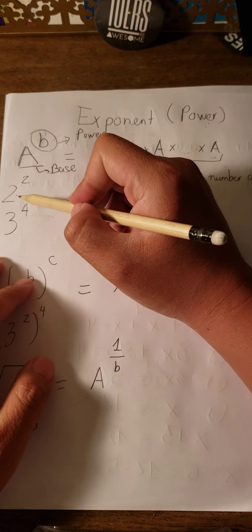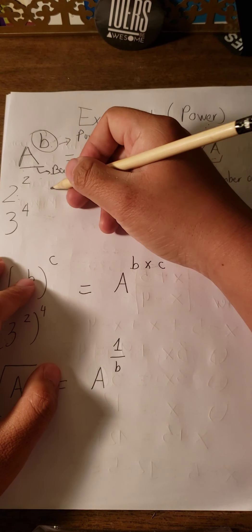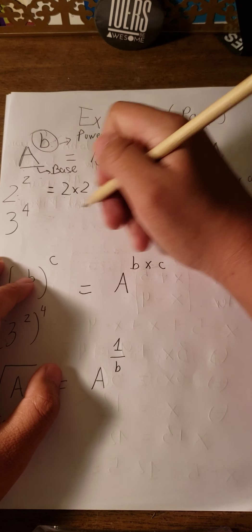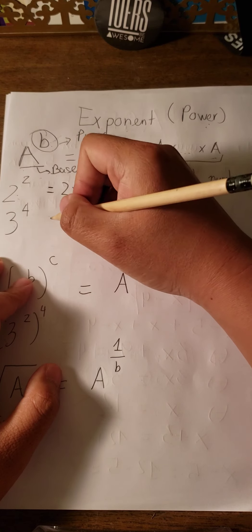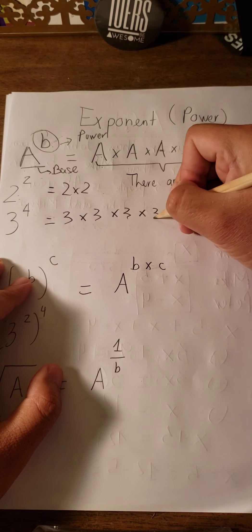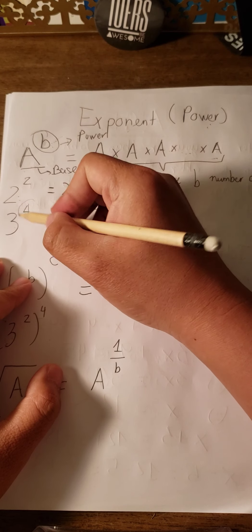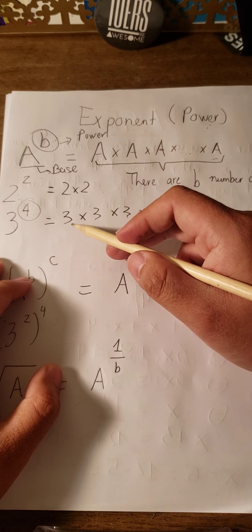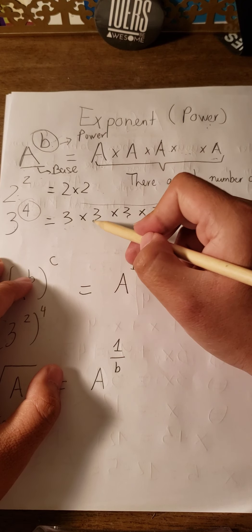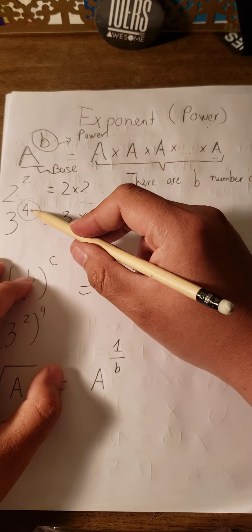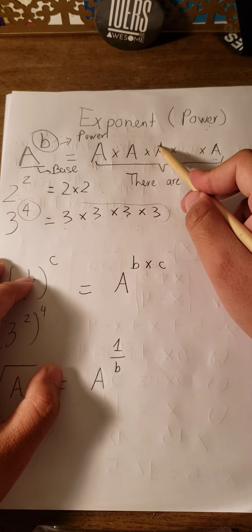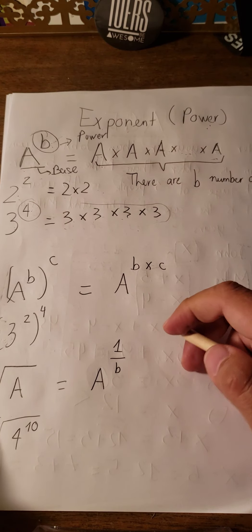For example, we have 2 power 2, which means 2 multiplied by 2 because there are only 2 numbers. And 3 power 4 means we have 3 multiplied by 3 multiplied by 3 multiplied by 3 — there are 4 threes multiplied together, because 1, 2, 3, 4. That's why we have the exponent power.